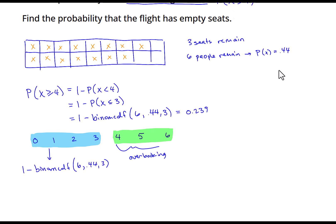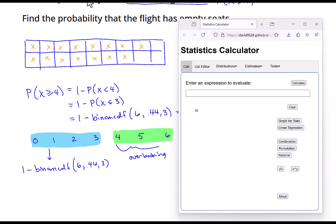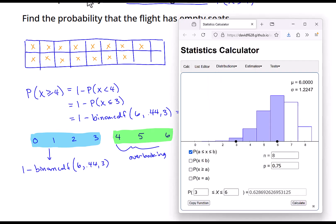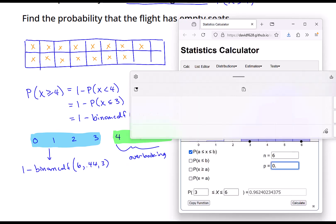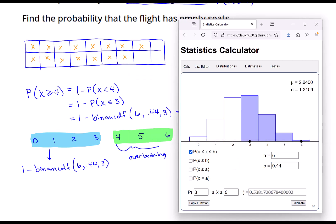Now, some of you may be using my online stats calculator, and that is fine as well. To use it for this question, you would just go under the binomial distributions, set n to be 6, and p set that to be 0.44. And then what we're looking for is the probability of an overbooking, which would be 4 or more. We'll make sure that the bars associated with 4 or more are highlighted. And so this sum, the sum of these heights of these bars is the 0.239.